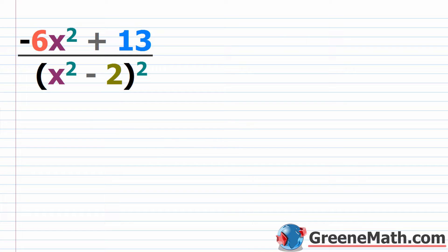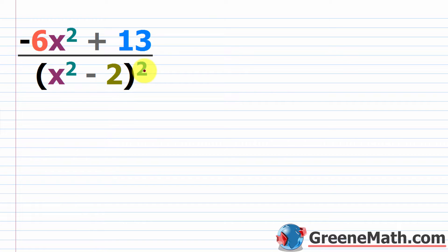Let's look at an example from our test on partial fraction decomposition. This would be number five. We have negative six x squared plus 13 over the quantity x squared minus two, being squared.